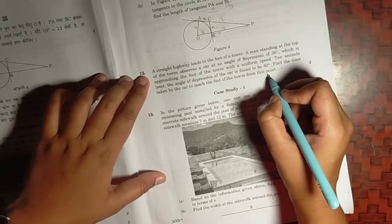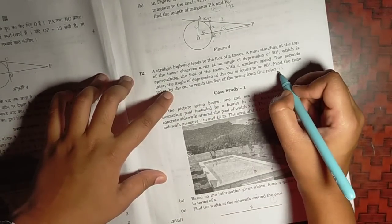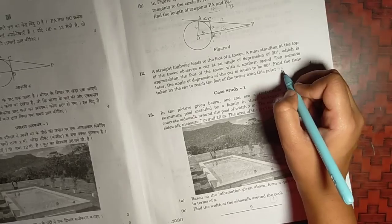Twelfth question, we have the time to be taken from the car to reach from the foot of the tower from the point where it's reached will be 5 seconds.